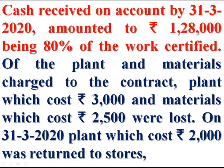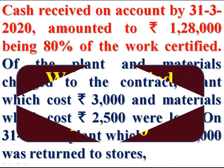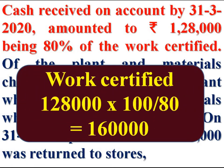Cash received on account by 31st March 2020 amounted to Rs 1,28,000, being 80% of the work certified. So 80% of work certified equals Rs 1,28,000. Therefore, work certified equals 1,28,000 divided by 80 multiplied by 100, which equals Rs 1,60,000. Credit it.